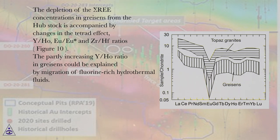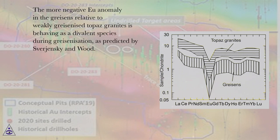The partly increasing Y/Ho ratio in greisens could be explained by migration of fluorine-rich hydrothermal fluids. The more negative Eu anomaly in the greisens relative to weakly greisenized topaz granites is behaving as a divalent species during greisenization, as predicted by Spurgynsky and Wood.